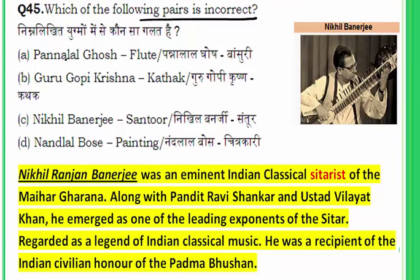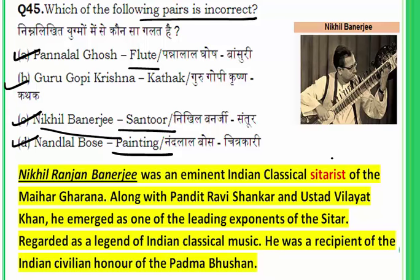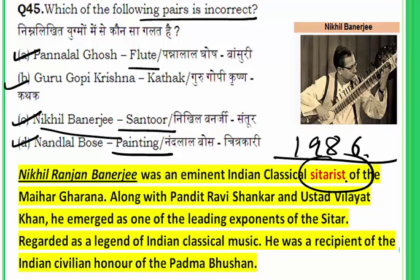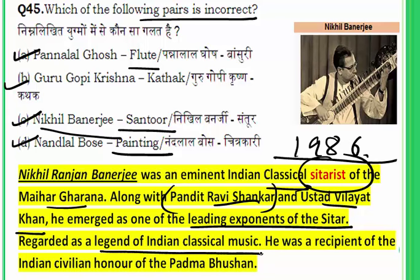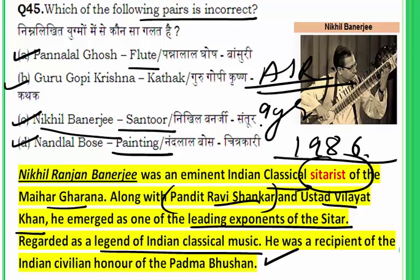Question 45 is related to art and culture. Which pair is incorrect — Pannalal Ghosh and flute, Guru Gopi Krishna and Kathak, Nikhil Banerjee and santur, or Nandalal Bose and painting? The incorrect pair is C: Nikhil Banerjee is associated with the sitar, not santur. Nikhil Ranjan Banerjee was an eminent Indian classical artist of the Maihar gharana, along with Pandit Ravi Shankar and Ustad Vilayat Khan. He was the youngest sitarist employed by All India Radio, at age nine.